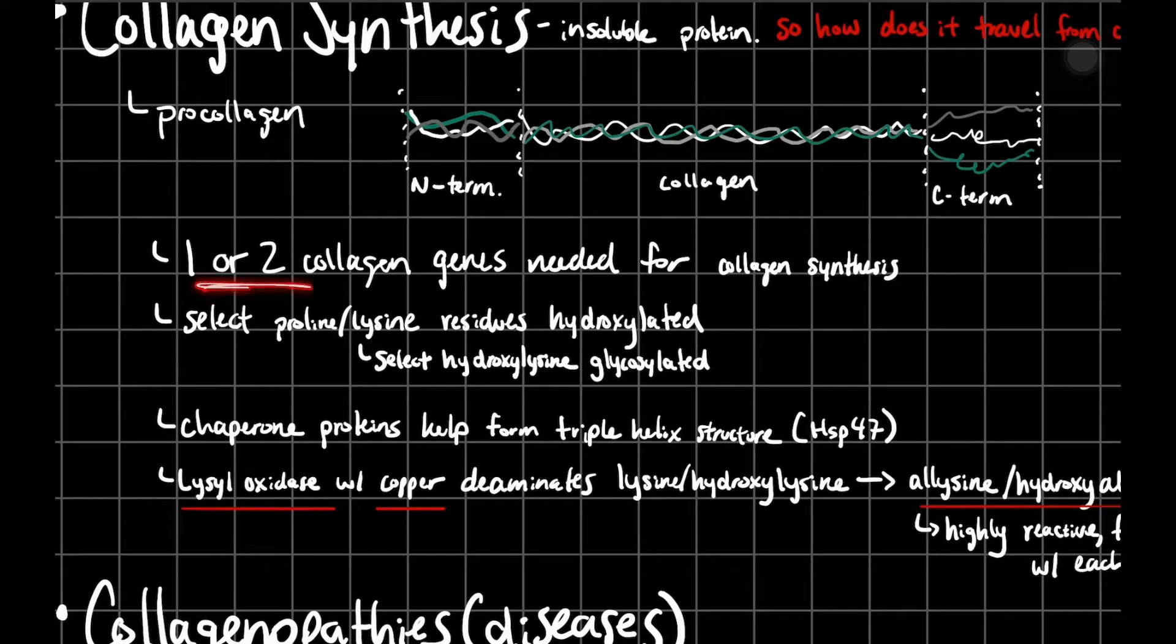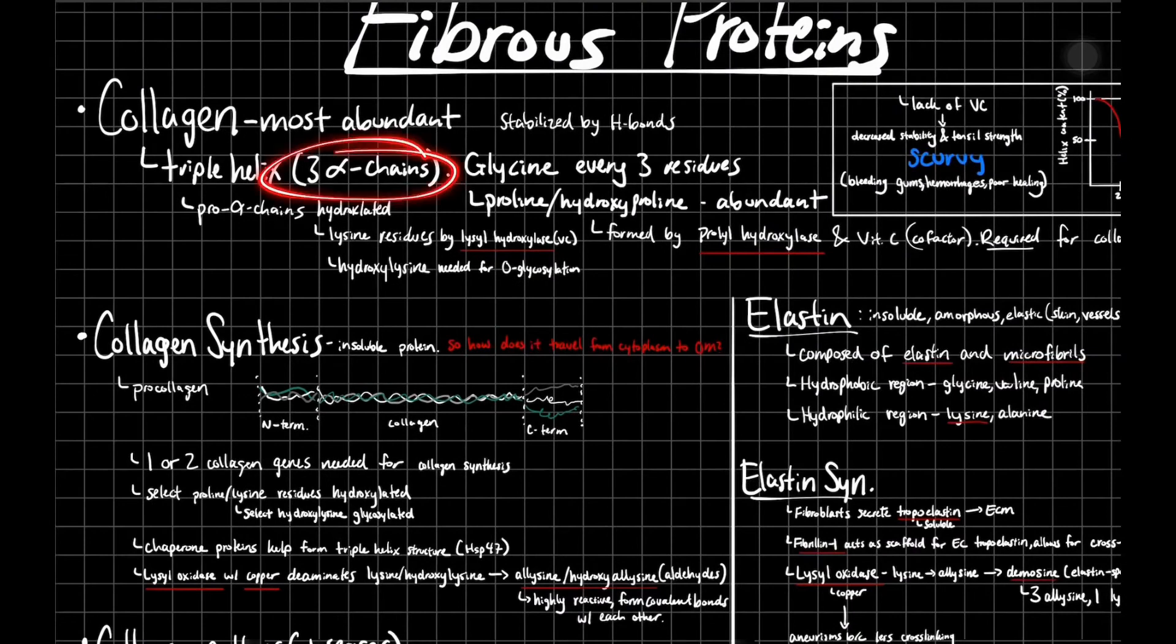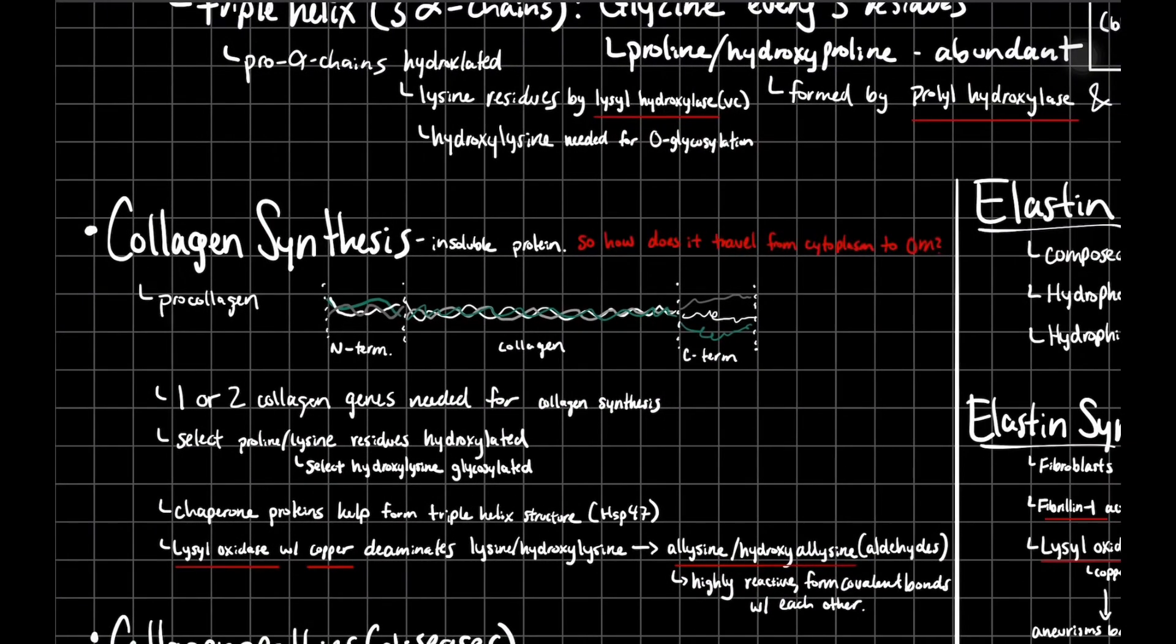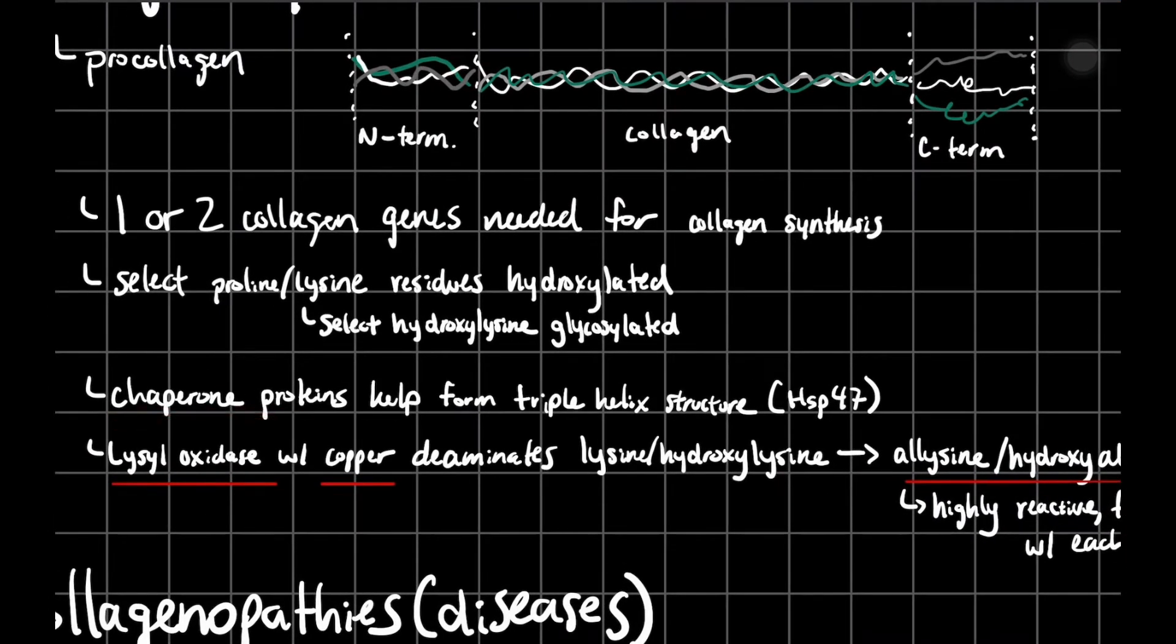It's synthesized through one or two collagen genes for collagen synthesis. Keep in mind, it's very different from your triple helix. Basically, you're just using the products of these two genes making that triple helix from it. Then you're going to have select proline or lysine residues hydroxylated by prolyl hydroxylase and lyso-hydroxylase. You're going to hydroxylate them, and then certain hydroxylysine residues are going to be glycosylated. Then we're going to have chaperone proteins to help form that triple helix structure. This type of structure is extremely complex, so when you first synthesize your protein, it's not going to fold exactly in a perfect triple helix structure, so you need some help from chaperone proteins such as heat shock protein 47, which help form that triple helix structure.